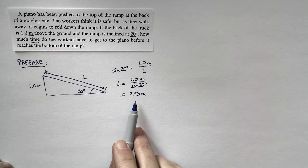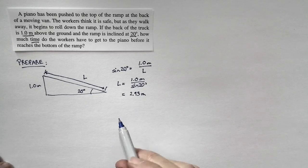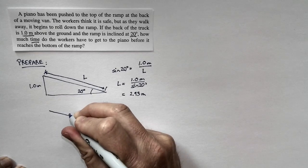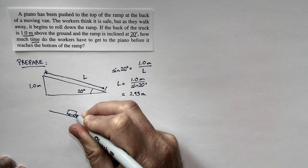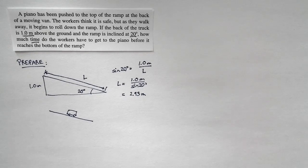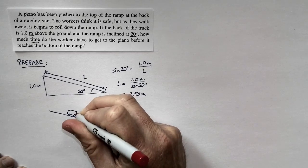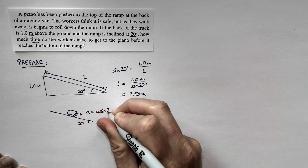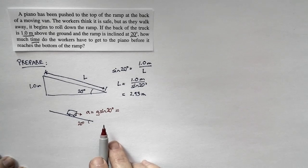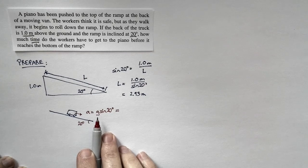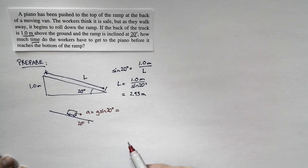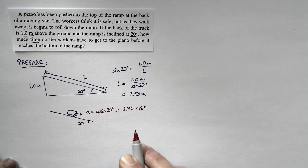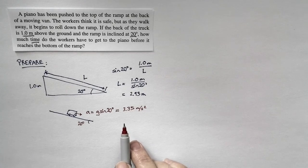Note this is a two significant figure problem — we've kept three significant figures because this is an intermediate stage of the calculation. The other thing we need to know is that when the piano is on the ramp, there's an acceleration moving down the ramp. The acceleration is equal to g times the sine of 20 degrees — that's our basic relationship for objects sliding down a ramp. Since we've drawn it moving to the right, we have a positive sign. With g equal to 9.8 meters per second squared, the acceleration is 3.35 meters per second squared. Again, we've kept an extra significant figure because this is an intermediate stage of the calculation.